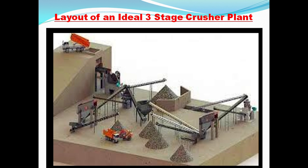This is a three-stage crushing plant. If you see this ideal crushing plant layout, this is the primary crusher called a jaw crusher. The dumper dumps the material, and from there it goes through a vibrating feeder into the primary crusher. Then this is the secondary crusher, and from there it goes to the screen, which separates the material. The oversize goes back through the conveyor like this, and then it goes through the tunnel to the secondary crusher.